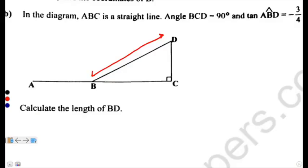So how do you find this length? First thing, take note of what you have been given. They have said the value of tan ABD is equal to negative 3 over 4. So this is the first step.